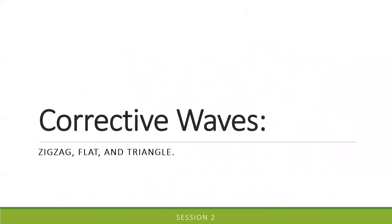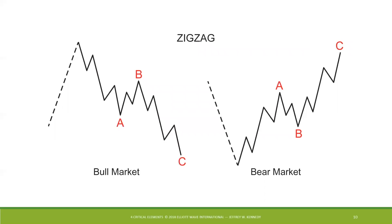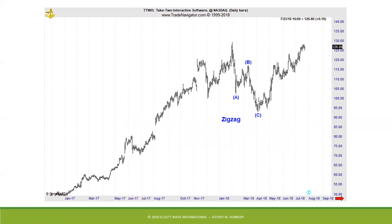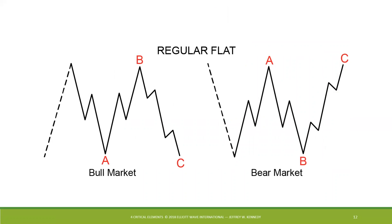Following the ending diagonal, we see the first type of corrective structure: the zigzag. A zigzag is referred to as a five-three-five pattern. In a zigzag, wave A is five waves, wave B is three waves, and wave C is five waves — that's why we call it a five-three-five pattern. An example of a zigzag was evident in Take-Two Interactive, ticker TTWO, in early 2018 off the high. Notice we have an impulsive decline, a three-wave advance, followed by another impulsive decline.